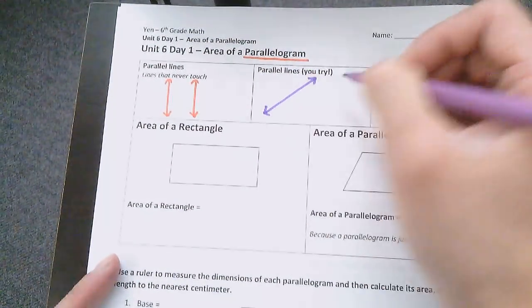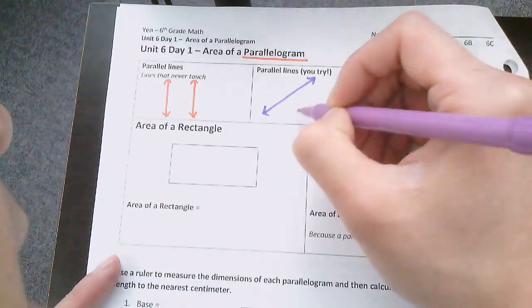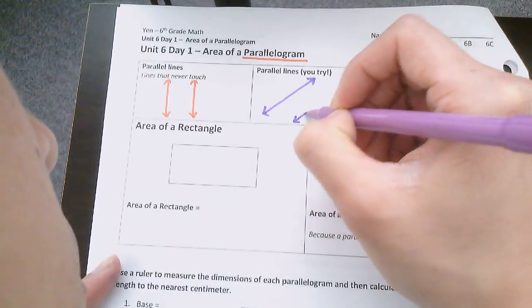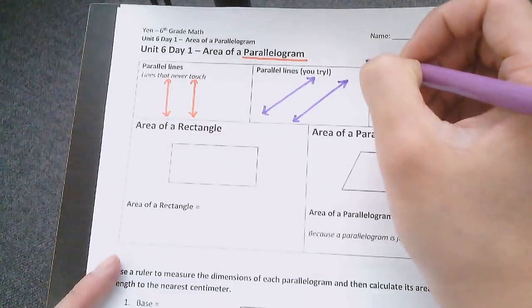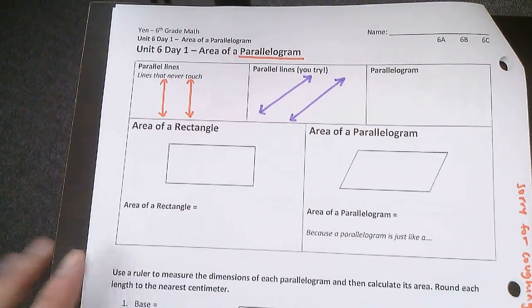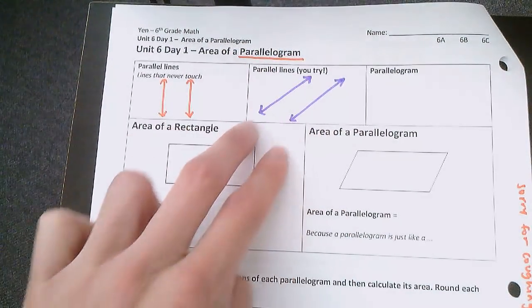Okay now let's check. You could have drawn it anywhere. I'm gonna draw mine right here. And it should look something like that. If you extend the two lines forever they will never touch.